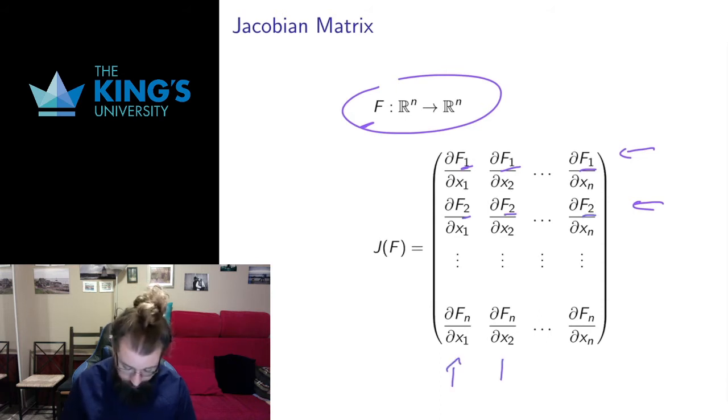In each column, I take one of the original variables, x1, x2, up to xn. And between that, I get an n-by-n matrix that sort of captures all of the derivative information.